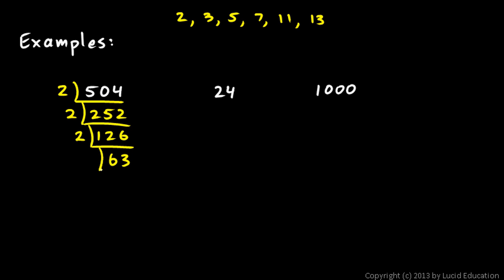And 63 is not divisible by 2. But it is divisible by 3. It's 3 times 21. And 21 is divisible by 3. It's 3 times 7. So we're done. 2 times 2 times 2 times 3 times 3 times 7. And if you wanted to, you could write that as 2 cubed times 3 squared times 7.